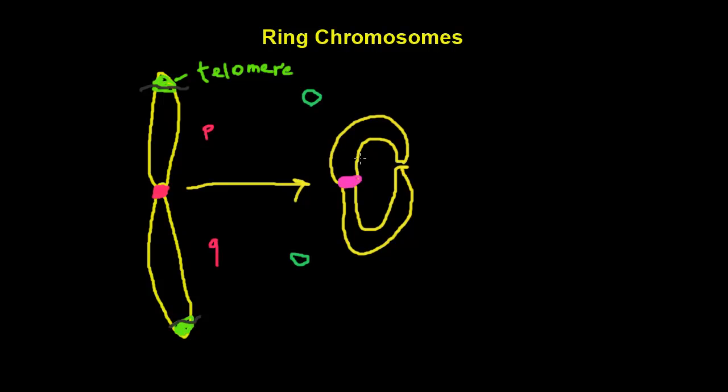Ring chromosomes may arise when, as I said, telomeres are lost leaving sticky ends that adhere. And exposure to radiation can also form rings.